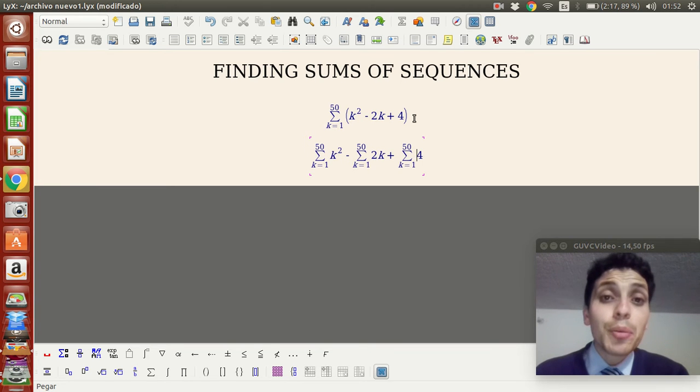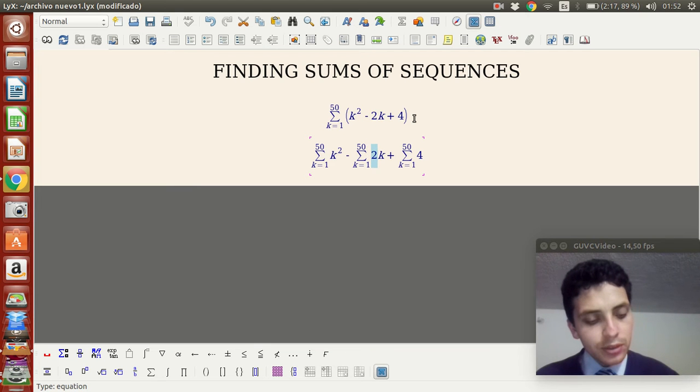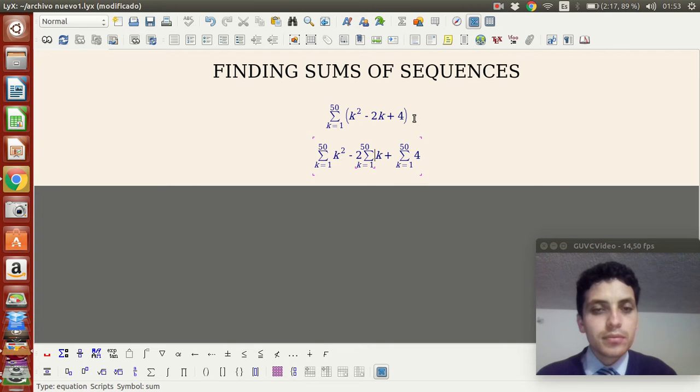Then we can simplify each one of these. For example, for this sum we have a constant times k, so we can factor the constant out of the sum. This is another property.